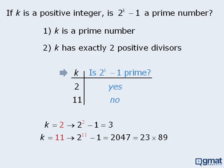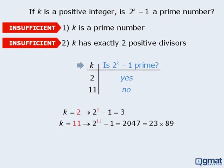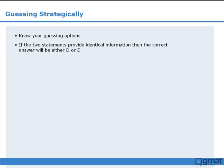Since we are unable to determine whether or not 2 to the power of k minus 1 is prime, the two statements must be insufficient, which means the correct answer here is E. To summarize, if you are forced to guess on a data sufficiency question, be sure to know your guessing options, which can be deduced by using the elimination method. Also, if the two statements provide identical information, then the correct answer must be either D or E.